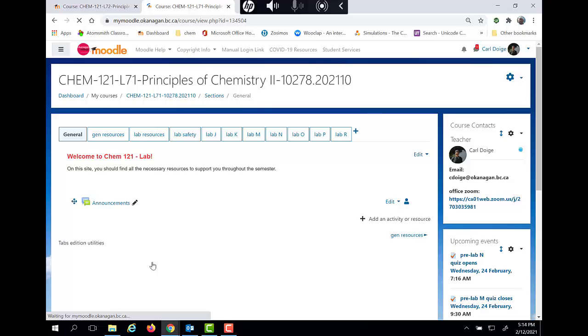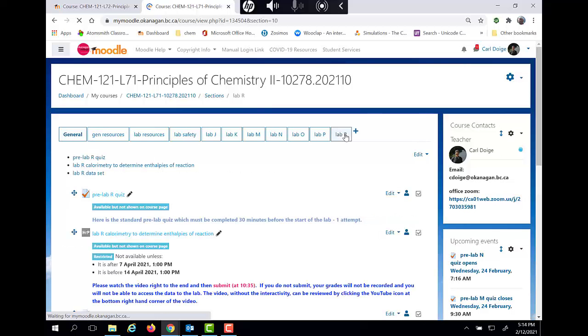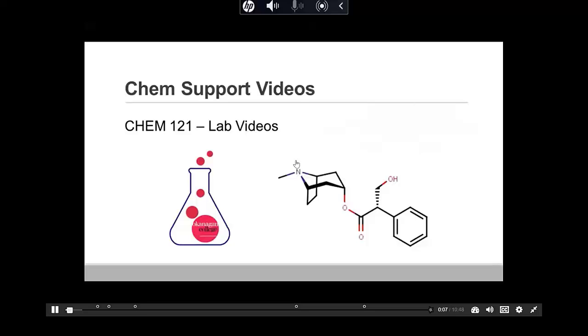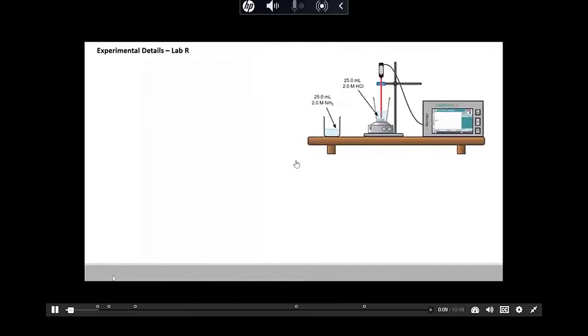Here we see one example for a calorimetry experiment. The videos provide some theoretical background and context and show the actual lab technique and data collection. Our goal in this lab is to use coffee cup calorimetry to experimentally determine the enthalpy change for two different aqueous reactions.